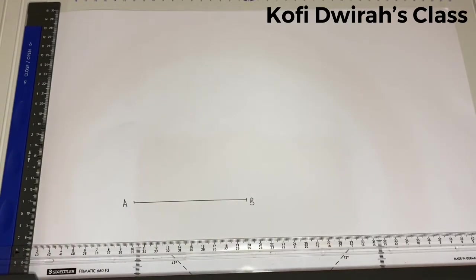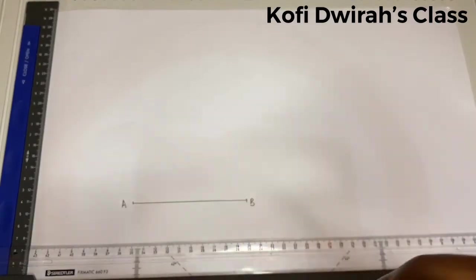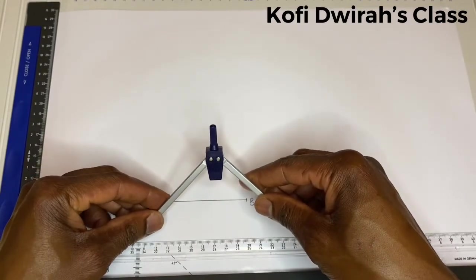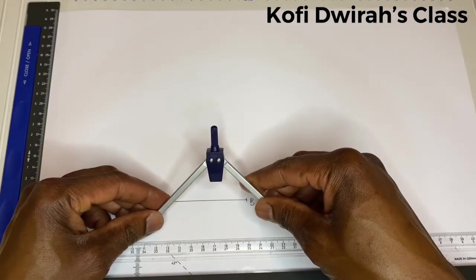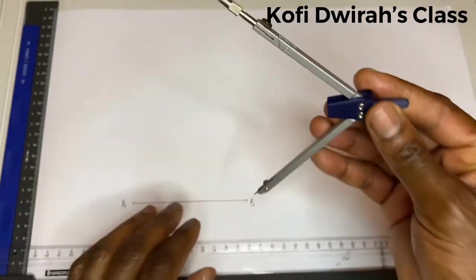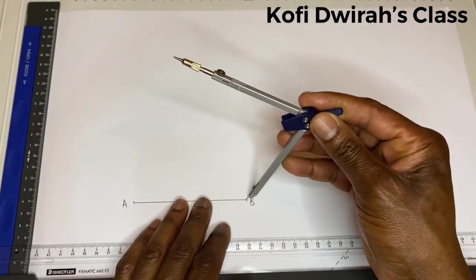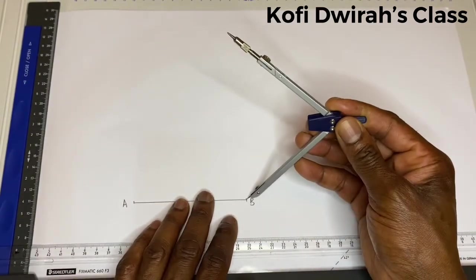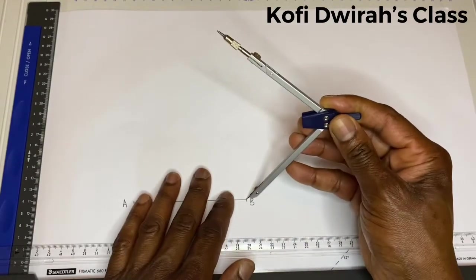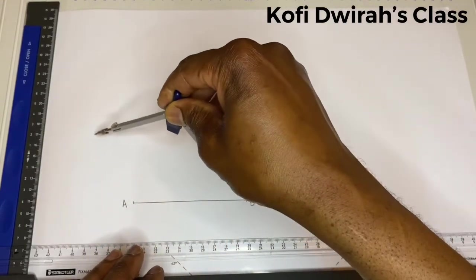Then BC is to be 15 centimeters. So from point B, you draw your arc of 15 centimeters.